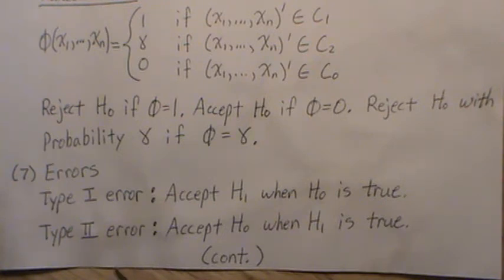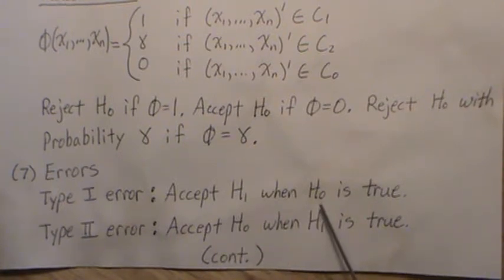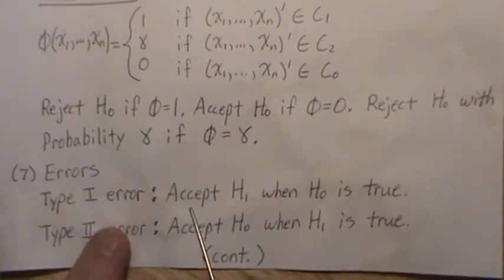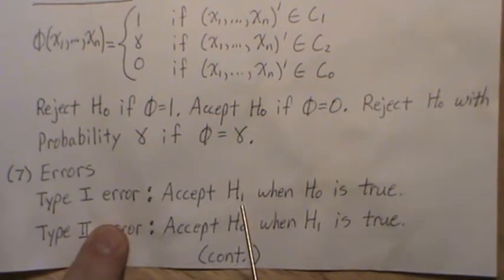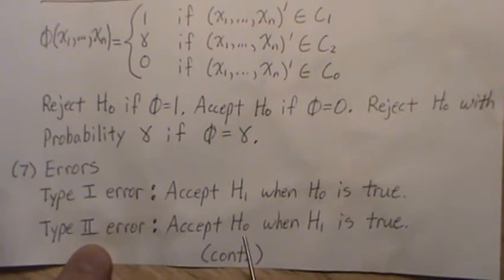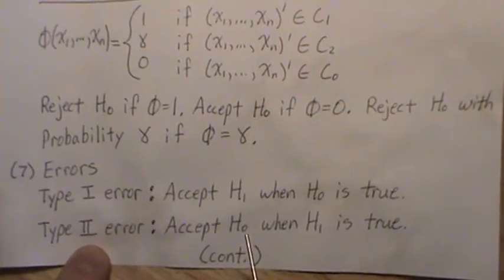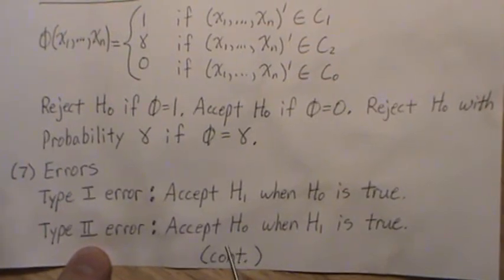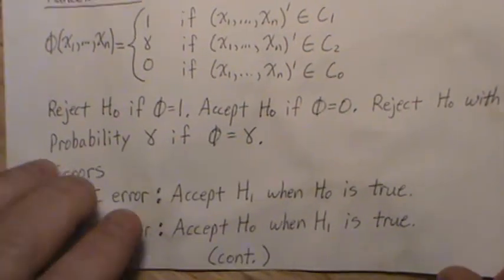If we collect our data and it says H1 is true, but really H0 was true, that's an error. We wrongly accept H1—that's a type 1 error. We wrongly accept H0—that's type 2 error. When H1 is true but the data indicates H0 is true, that's a type 2 error.